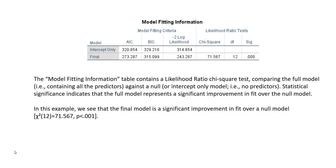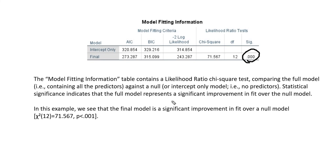Let's start with the model fitting information table, which contains a likelihood ratio chi-square test comparing the full model with all predictors against a null or intercept-only model. Statistical significance indicates that the full model represents a significant improvement in fit over the null model. The p-value here indicates statistical significance, so we interpret our model as representing a significant improvement in fit over the null.